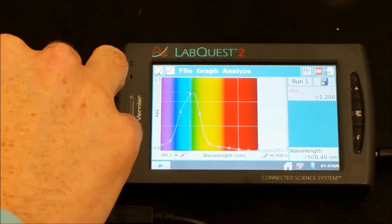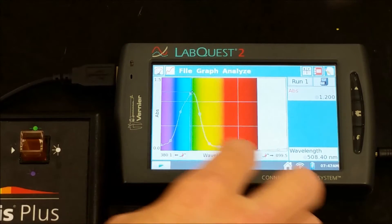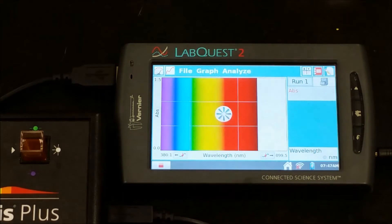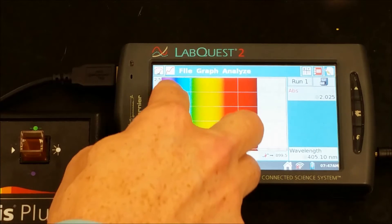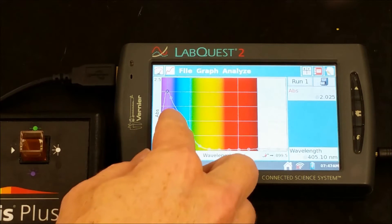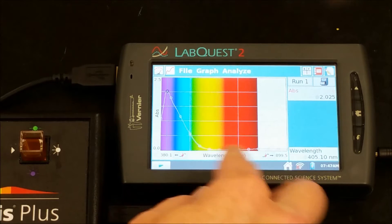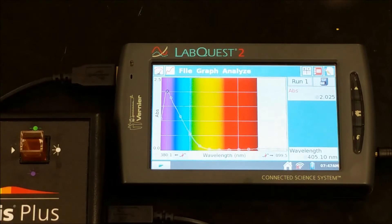Now we're going to take that out and put in the orange solution. We'll hit play again. Now we see that purple is the biggest absorption, some blue is being absorbed, and we're seeing a lot of red, orange, and yellow being transmitted through the solution.